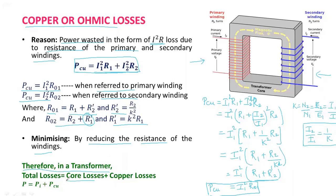Overall, the total losses in the transformer is the sum of core losses and copper losses, given by the equation: Total losses = Pi + PCU. That's all for today — thank you so much for watching. Remember to work hard to see the magic. See you in the next one.